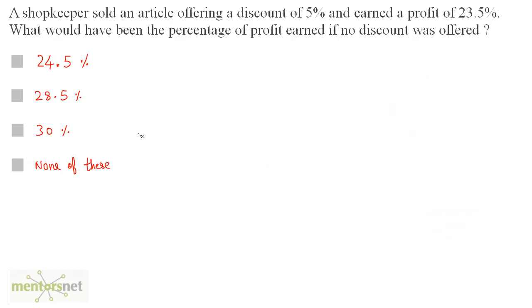A shopkeeper sold an article offering a discount of 5% and earned a profit of 23.5%. What would have been the percentage of profit earned if no discount was offered?